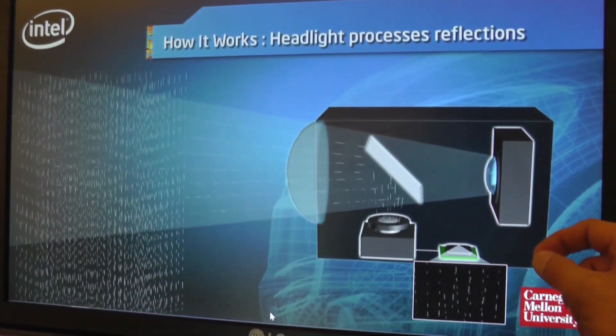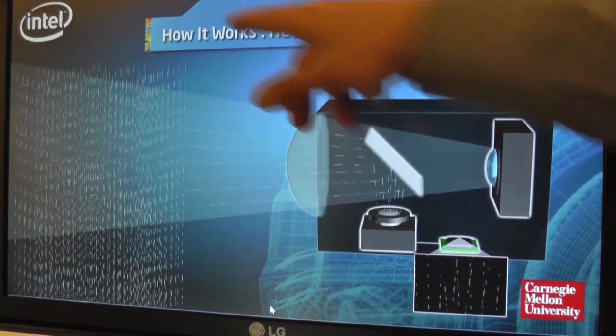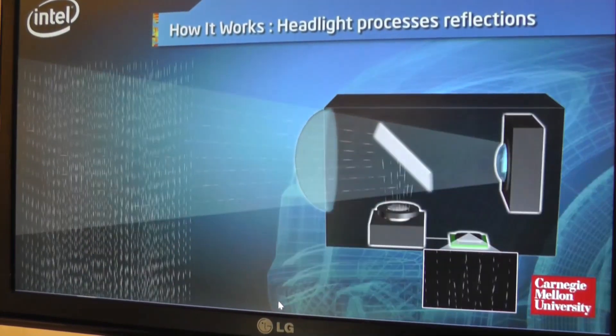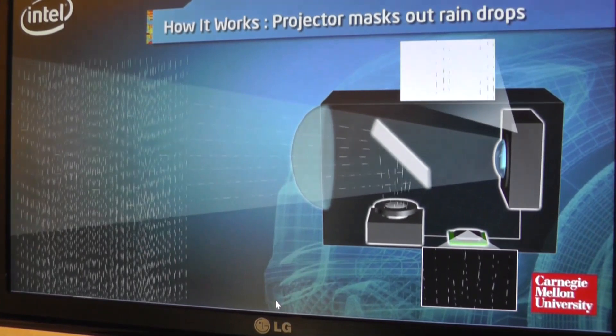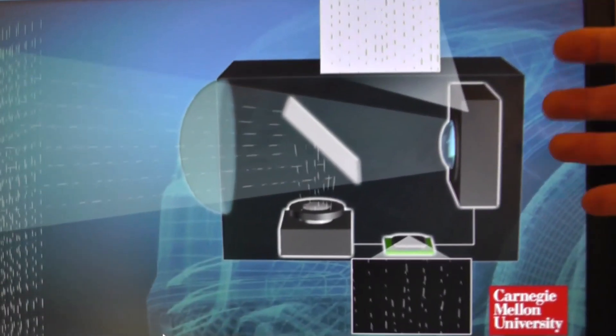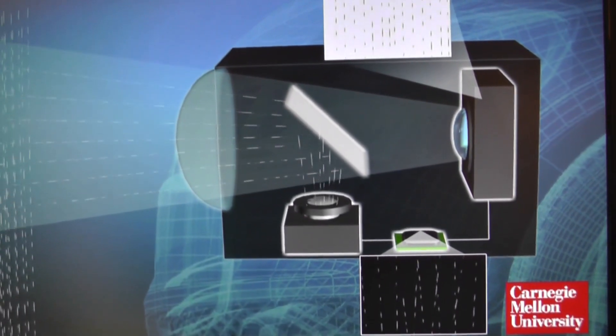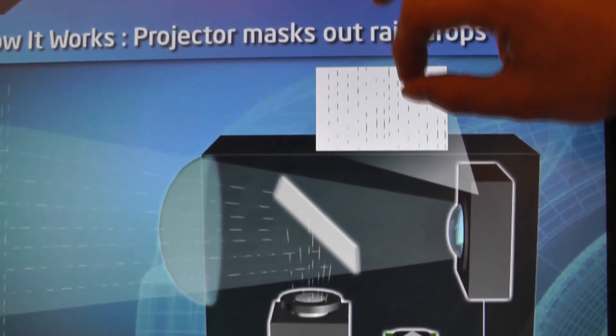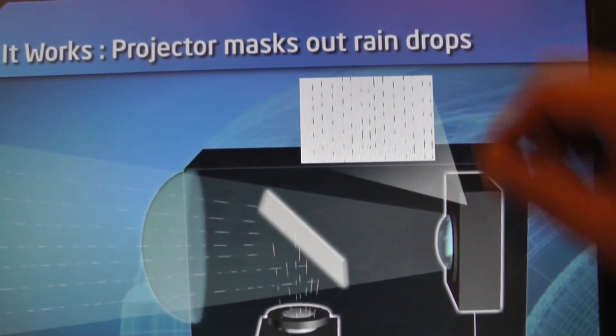We're trying to predict those future locations of where the rain will be falling as it passes through the beam. Then we share that information with a projection style headlight that will produce black dots specifically where we think those raindrops will be falling.